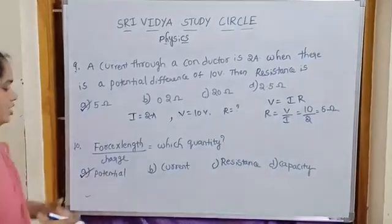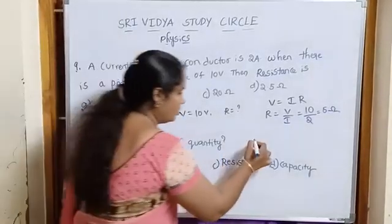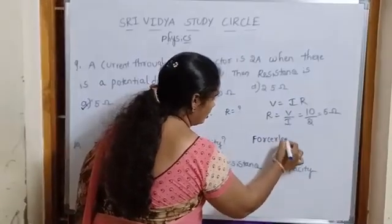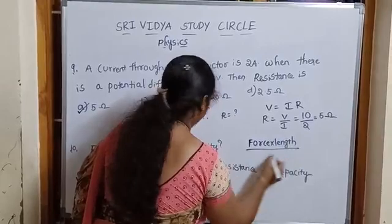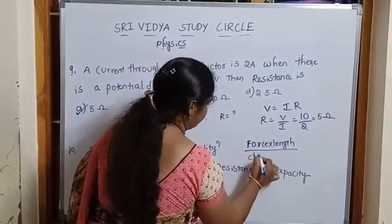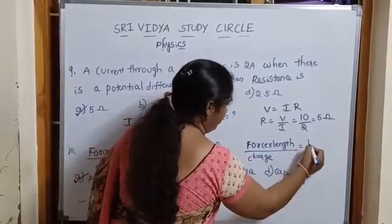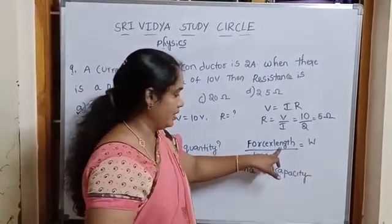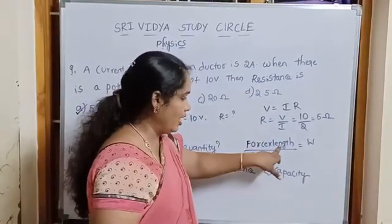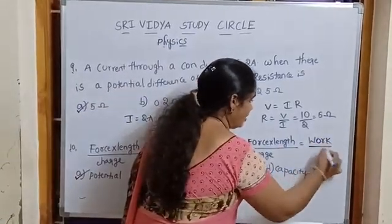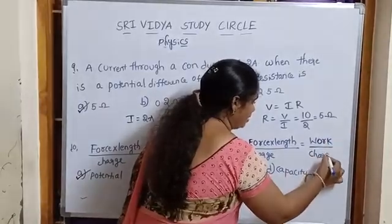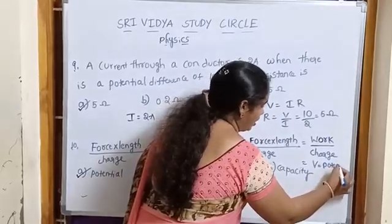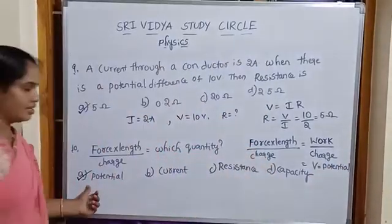force into length by charge. Force into length is measured in meters, displacement is also measured in meters, then force into length is equal to work. Work by charge gives potential. It is denoted by V, V is equal to potential. Then option A is correct.